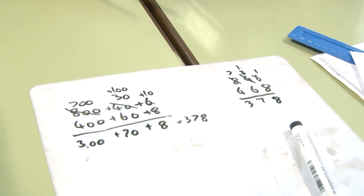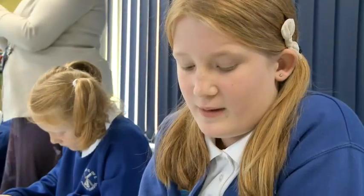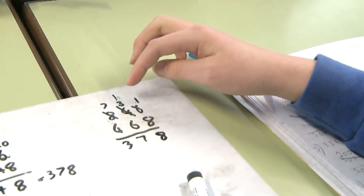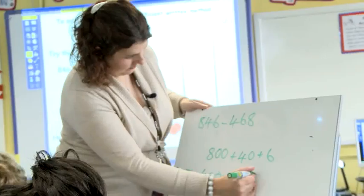If children are to make progress with regards to written calculation, children really need to have that secure grounding in mental calculation — they need to know their number bonds, their number facts, they need to understand partitioning, their times tables, all of the early skills of mental calculation. Then children can move on with traditional written methods or written algorithms at an appropriate pace — they will just grasp it. The children were able to learn the traditional decomposition without a lot of input from myself because their grounding in mathematics was so good, and because I'd given them the secure understanding of the expanded decomposition method, they were able to do that with very little input.